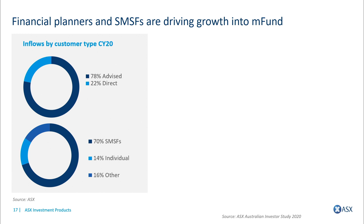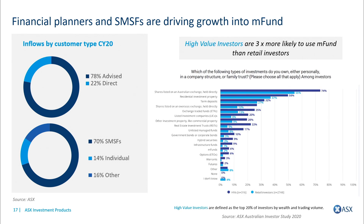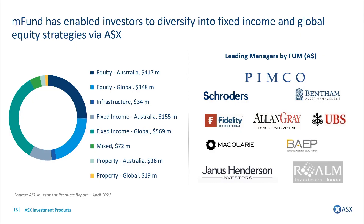Core to M-Fund is its use by self-managed super funds, which are very used to holding assets on their HIN on the ASX but are probably overweight Australian equities. They're using M-Fund to get access to other asset classes and investment strategies. Research from the ASX shows that high-value investors are three times more likely to use M-Fund than a retail investor. In terms of asset classes, it's predominantly fixed income — PIMCO is the leader in funds under management — and access to global equities.